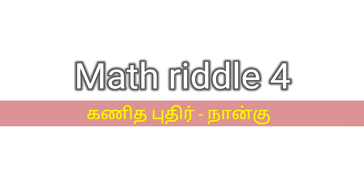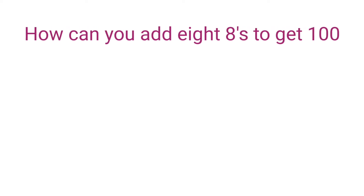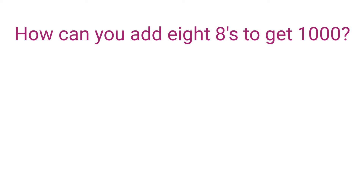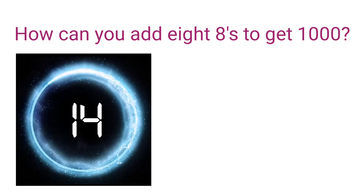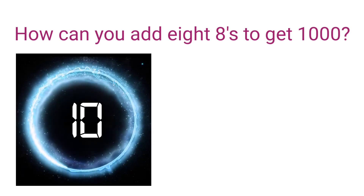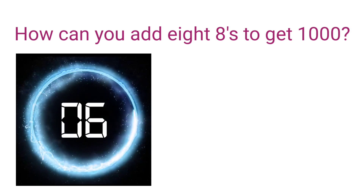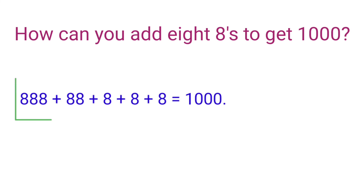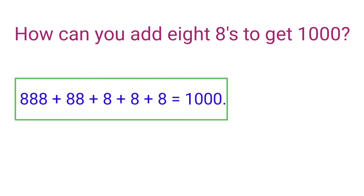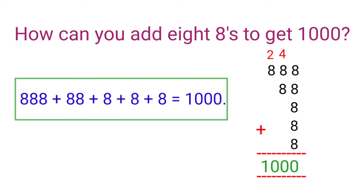Riddle Number 4: How can you add eight 8s to get 1000? Your time starts now. The answer is: 888 + 88 + 8 + 8 + 8 + 8 = 1000. You can also check this yourself.